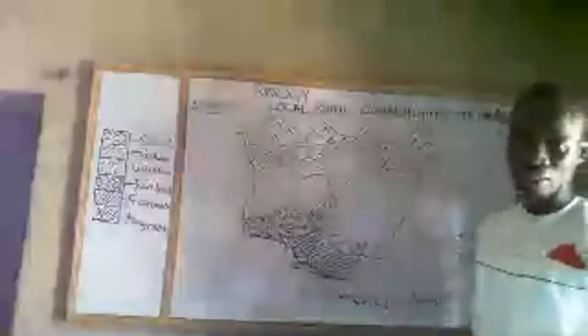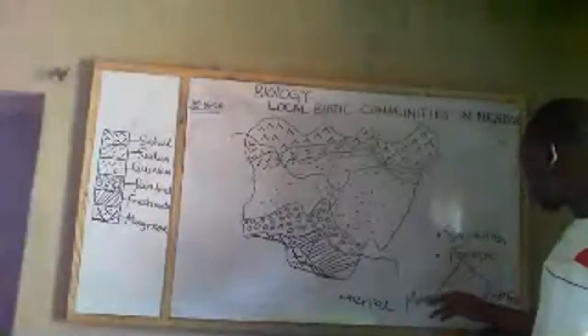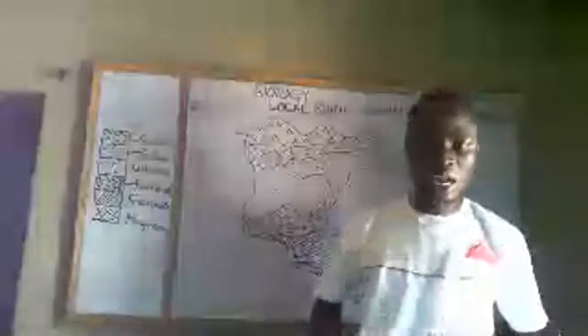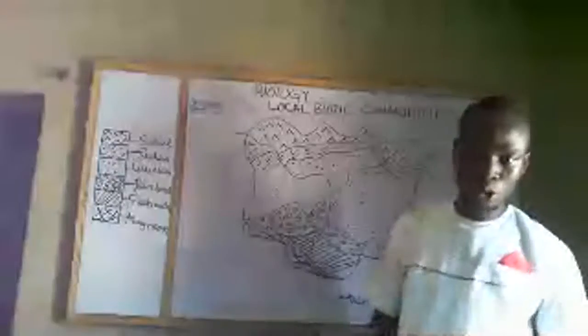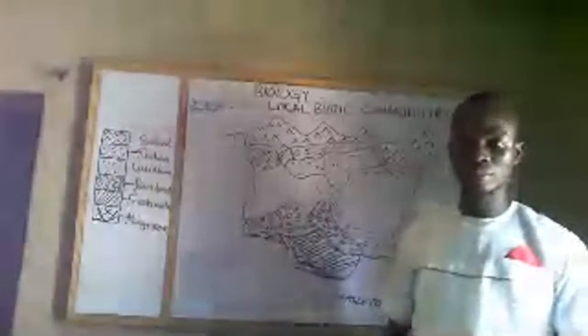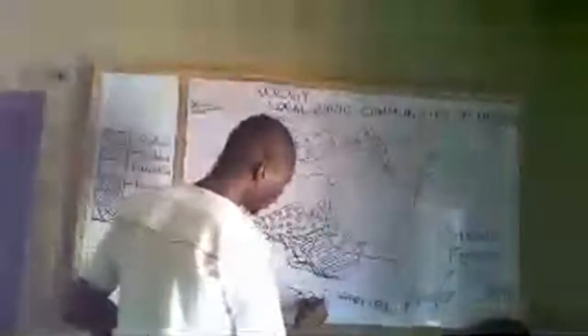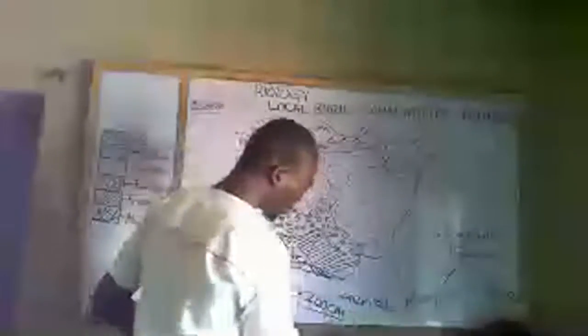Now let's move to the forest zone. In the forest zone, which is also a form of forest vegetation, we have tall trees growing in layers or strata. We have the top strata, the middle strata or middle layer, and the bottom layer. In the forest, the annual rainfall is usually more than 200 cm per year.